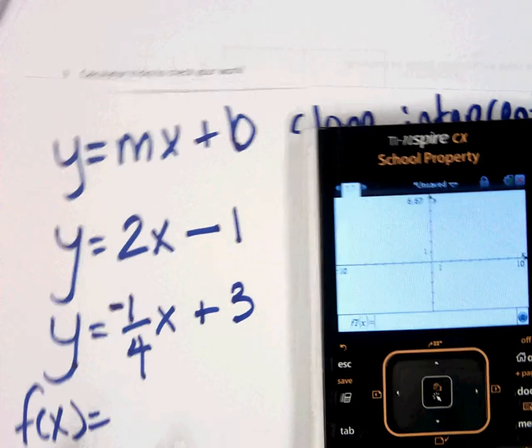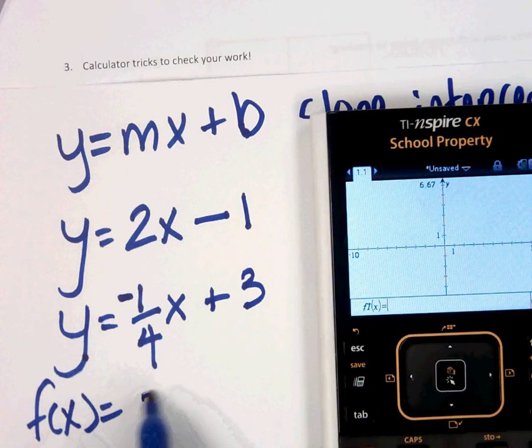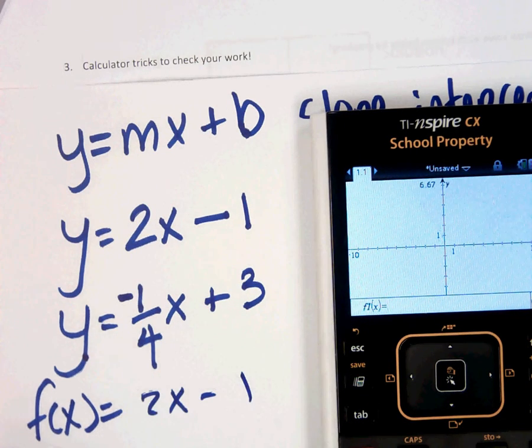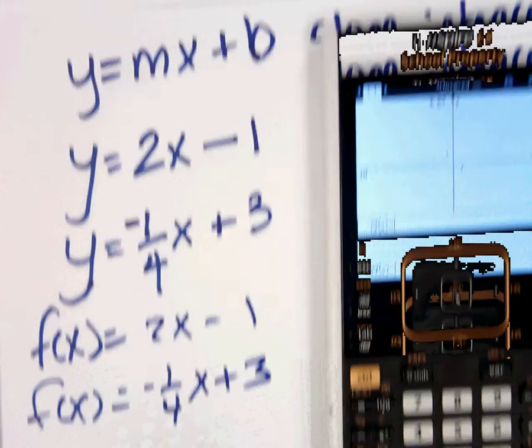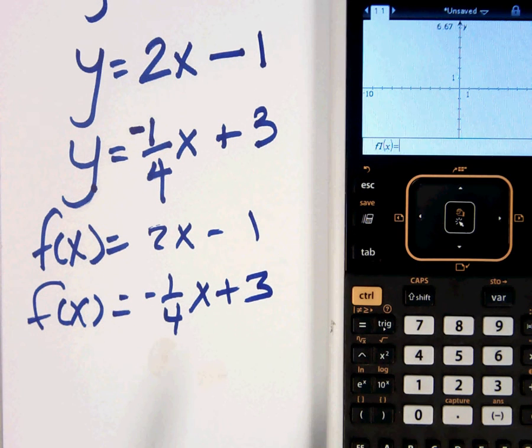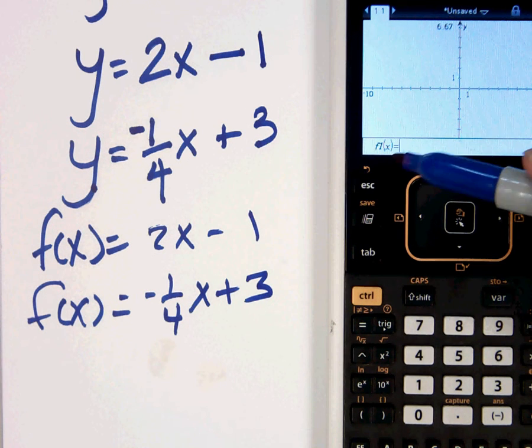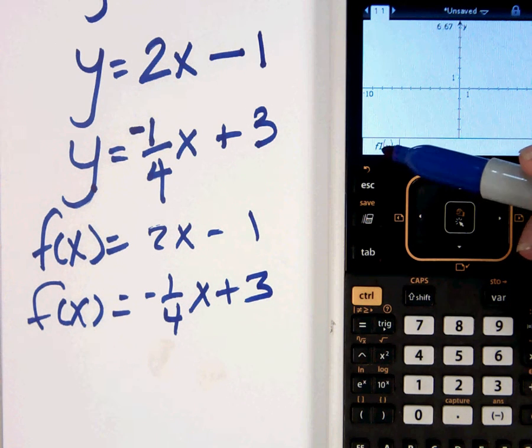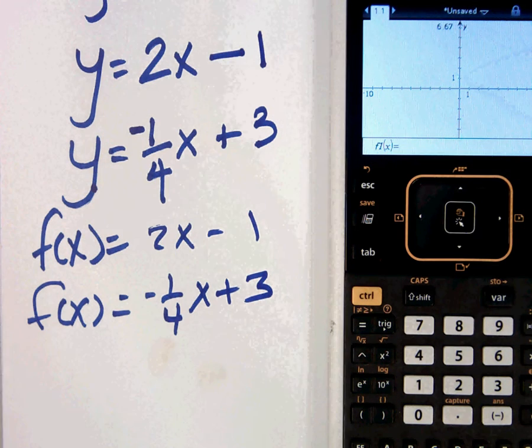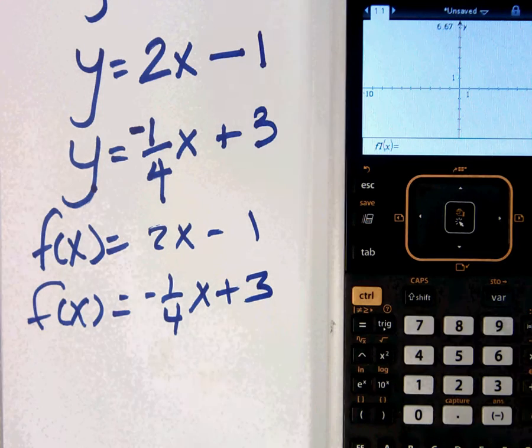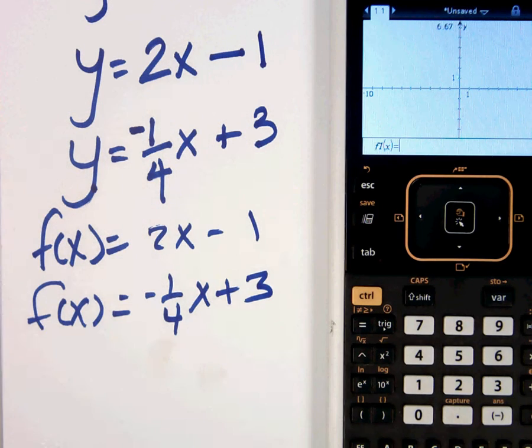So if you need to rewrite these using f of x so that you know how to type it in, go for it. And remember, this number here just represents how many equations you have typed in. And since we hit new document and then said no don't save, we started all the way over.